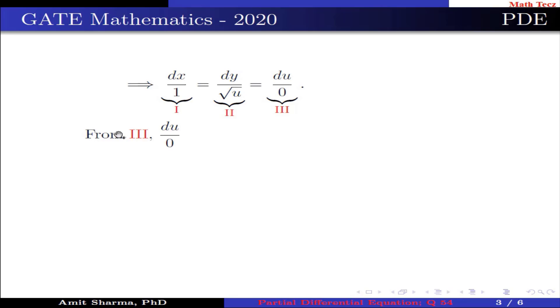From third we have du/0 implies u = c₁ where c₁ is arbitrary constant.